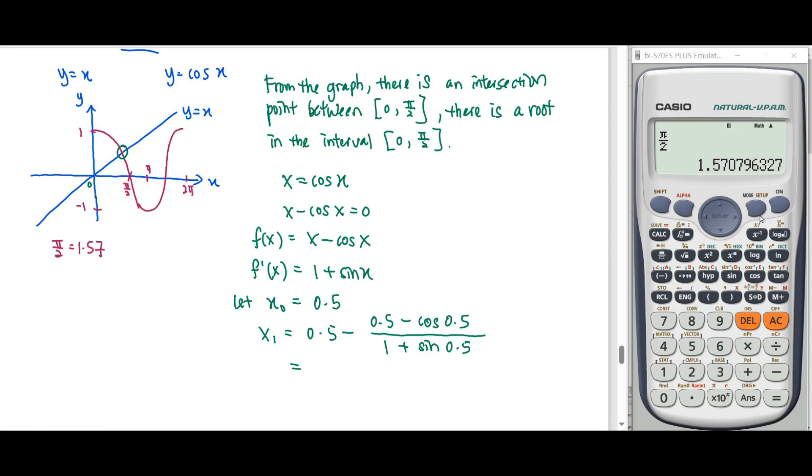Before we start doing this, remember to change your mode to radiant. Once your mode is in radiant, we can start typing in our formula, which is x minus the function (x minus cos x) over the differential function (1 plus sin x). We start with our initial value 0.5, then we get 0.755552.